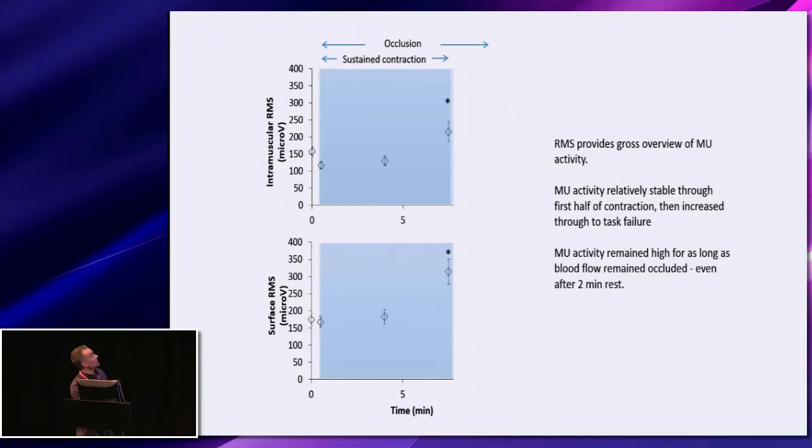The first figures, I'm just presenting the root mean squared from both the intramuscular recordings and the surface recordings and they pretty much followed the same pattern. The root mean squared gives an indication of overall motor unit activity. The first thing to point out is there's not very much response to the initial act of inflating the cuff. Motor unit activity is about the same. So from baseline to measurements taken just after the cuff was inflated.